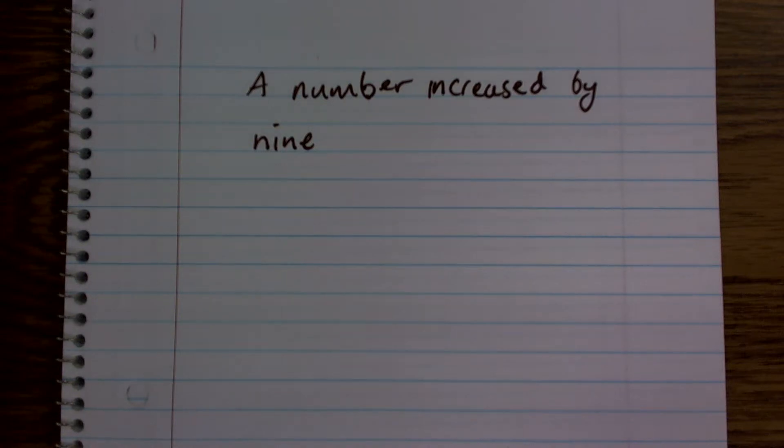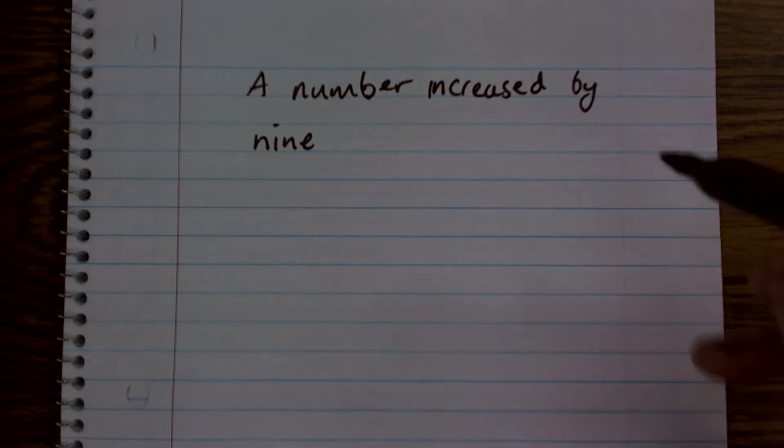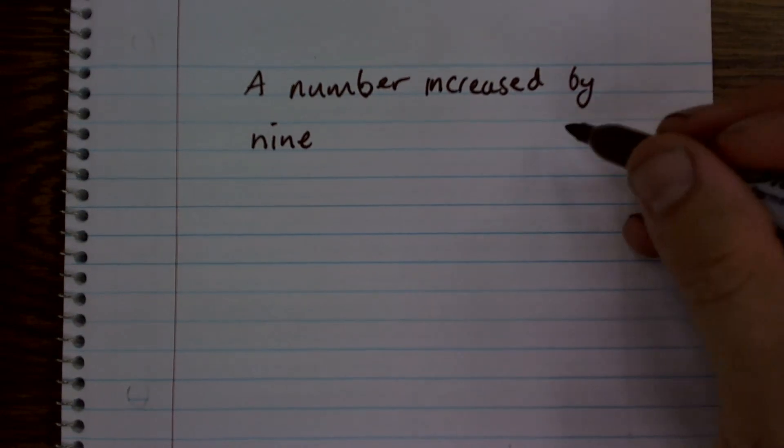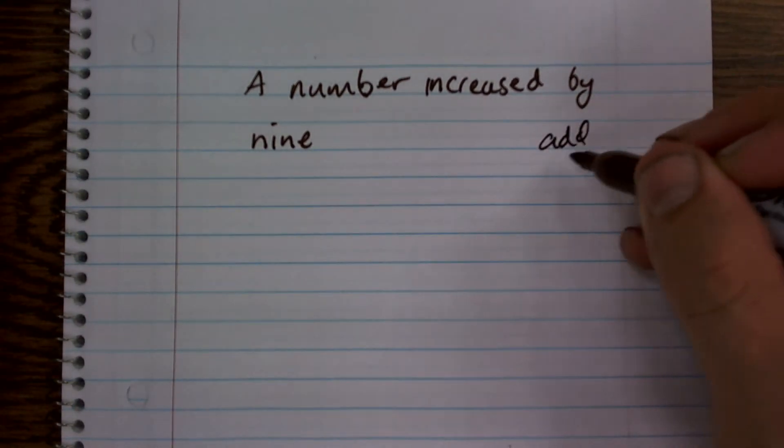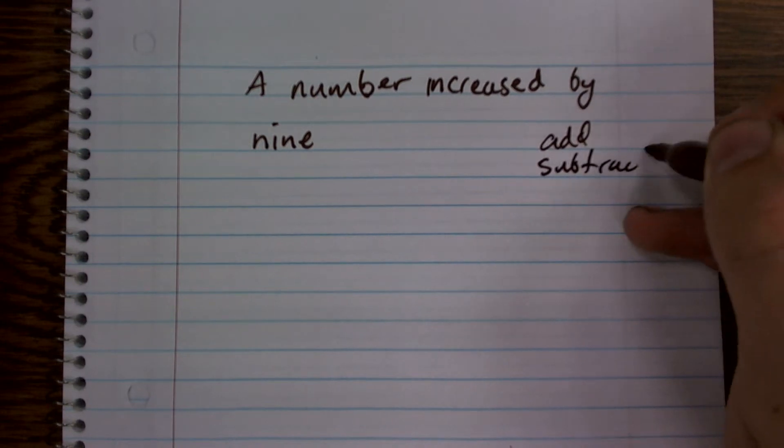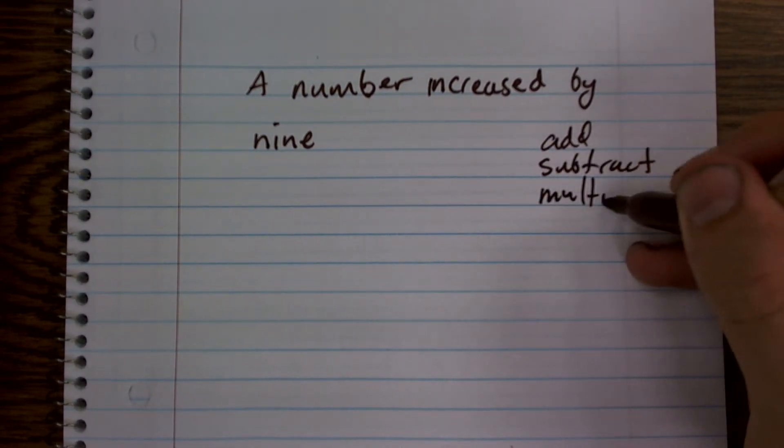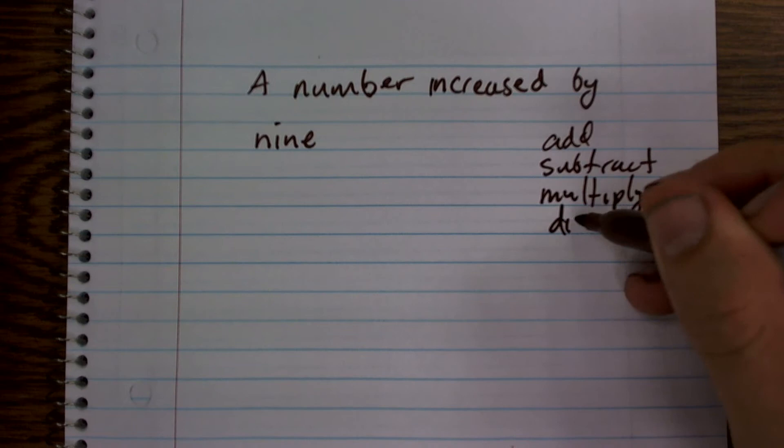OK, for this one, we say we have a number increased by 9. So we just need to look and see what is possible. We could either add, subtract, multiply, or divide.